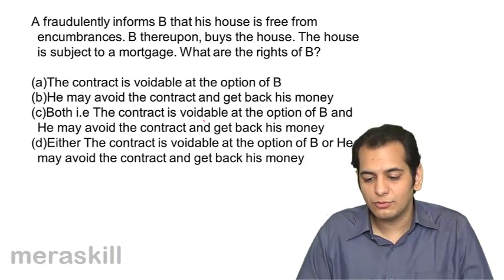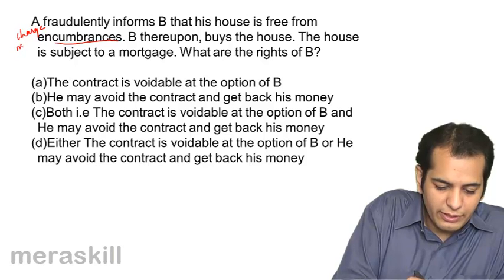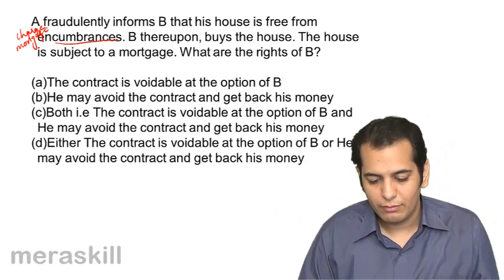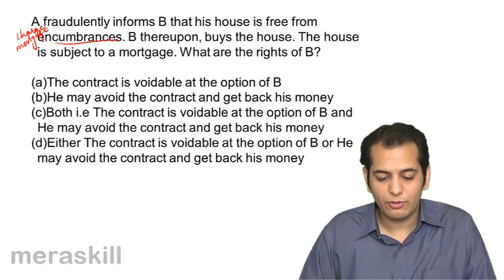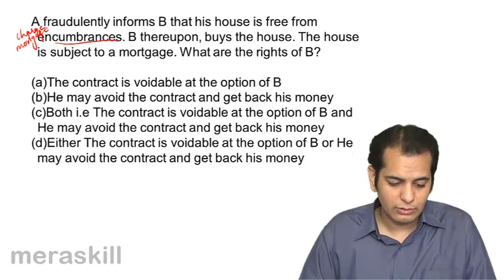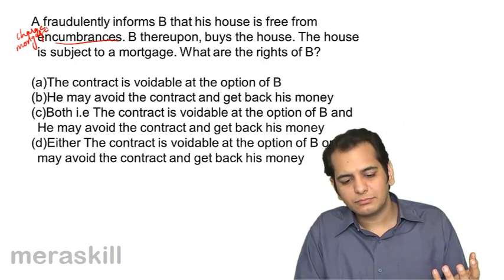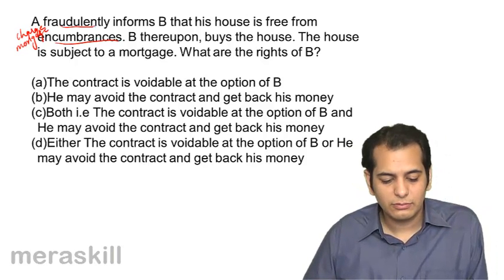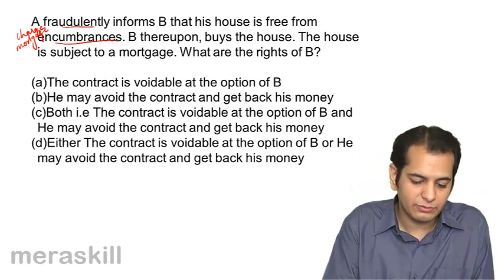A fraudulently informs B that his house is free from encumbrances — meaning any kind of charges like mortgage, pledge, or hypothecation. B thereupon buys the house, which is subject to a mortgage. What are the rights of B? A: the contract is voidable at the option of B. B: he may avoid the contract and get his money back. C: both. D: either of the two. The answer is both — the contract becomes voidable since A committed fraud, and B gets the option to avoid the contract and get his money back.